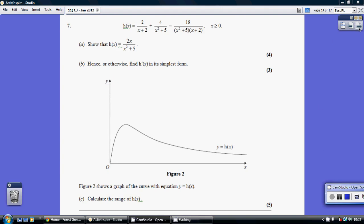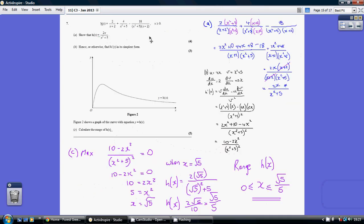Question 7. We need to show that this equals this. We're aiming to have a single term, so we need to gather these three terms together. We need to have a common denominator.